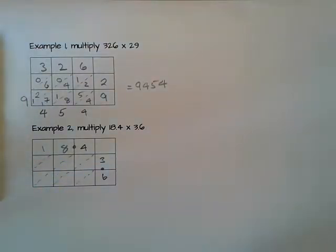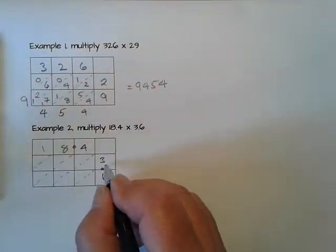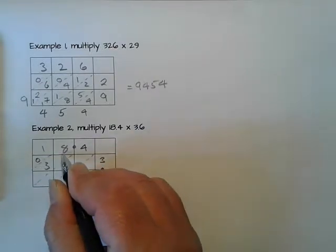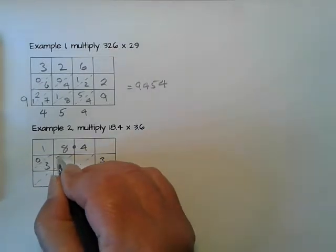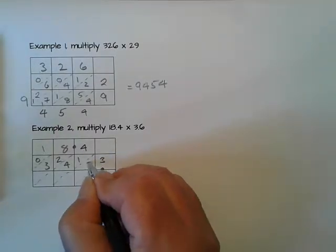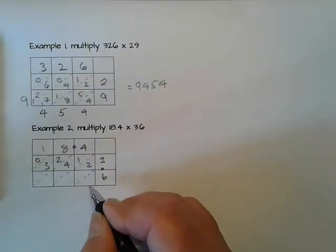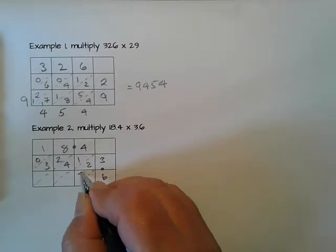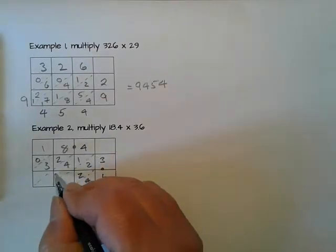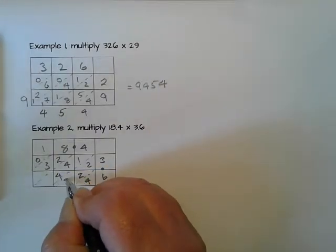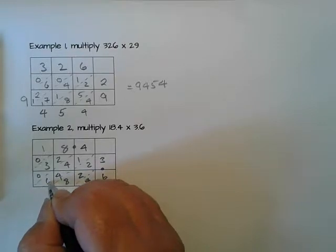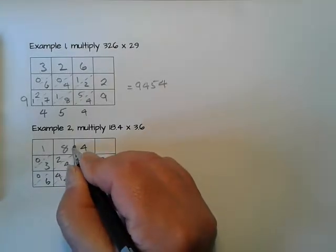It's exactly the same as before. 1 times 3 is 3. 8 times 3 is 24. 4 times 3 is 12. 4 times 6 is 24. 8 times 6 is 48. 1 times 6 is 6. Now the decimal point...